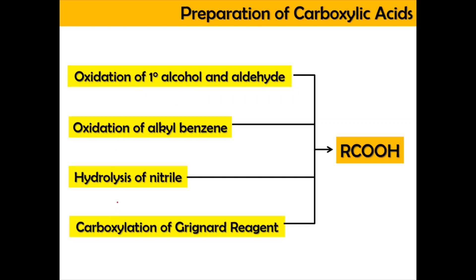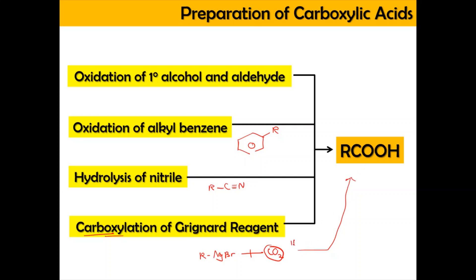To prepare carboxylic acid we will undergo four reactions. First is the oxidation of the primary alcohol and aldehyde. Then we look into the oxidation of alkyl benzene — the alkyl group attached to benzene, no matter how long the carbon chain is, when oxidized it forms a carboxylic acid. Next is the hydrolysis of nitrile, which consists of the C≡N bond attached to an alkyl or aryl group. Lastly, the carboxylation of Grignard reagent: RMgBr reacted with carbon dioxide, followed by hydrolysis to produce carboxylic acid.